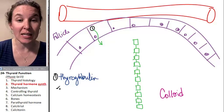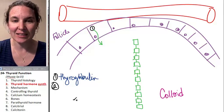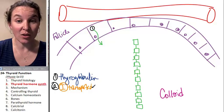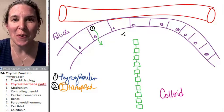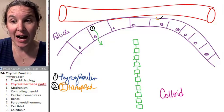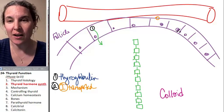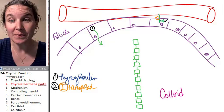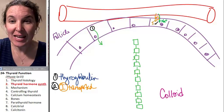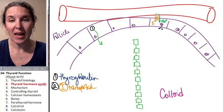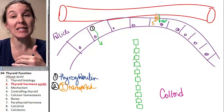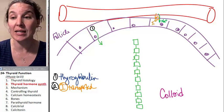Now the second thing that happens in the follicle cell is that iodine is transported into the colloid. And so here's the scoop. There is a little transporter. I'm going to do this in another cell. There's an iodine transporter that transports sodium and iodine into the follicle cell. And that's a symporter. And so they're working together, but the sodium is pumped down its concentration gradient, and it allows iodine to come along with it.